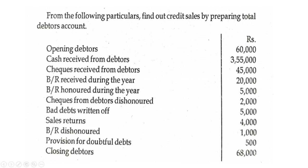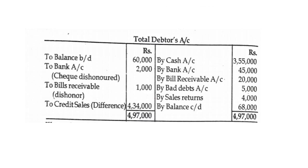Bills receivable dishonored 1,000; provision for doubtful debts 500; closing debtors 68,000. From this information, we have to prepare the total debtors account and find out the credit sales.